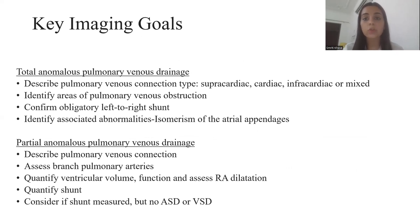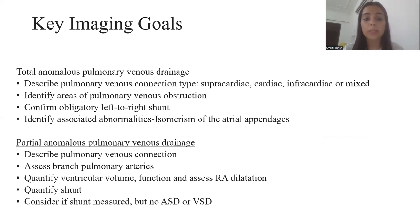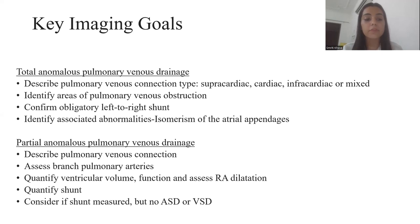The key imaging goals in anomalous pulmonary venous drainage are as follows. In total anomalous pulmonary venous drainage, we have to describe the pulmonary venous connection type — which is of four types: supracardiac, cardiac, infracardiac, and mixed — identify areas of pulmonary venous obstruction, confirm the left-to-right shunt, and identify associated abnormalities. In partial anomalous pulmonary venous drainage, we have to describe the pulmonary venous connection, assess the branches of pulmonary arteries, quantify the ventricular volume function, assess right atrial dilatation, and quantify the shunt.